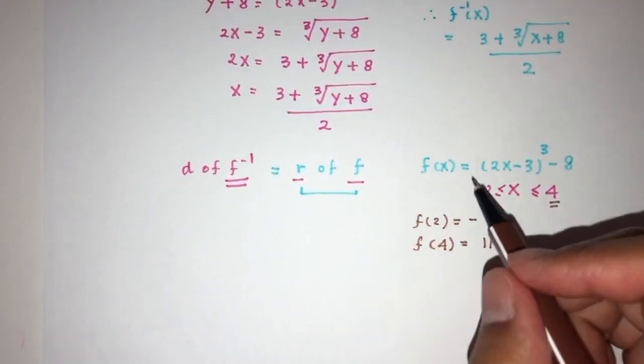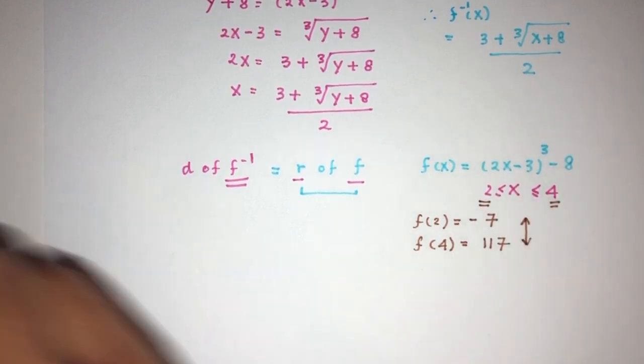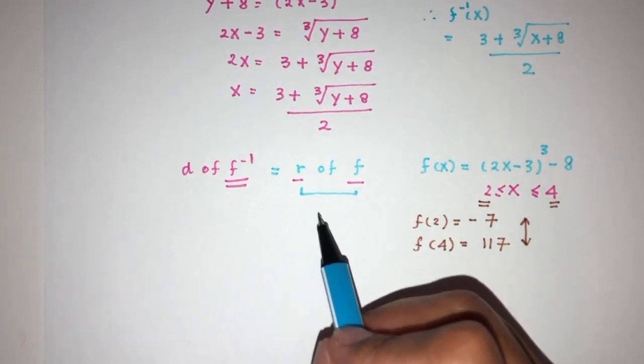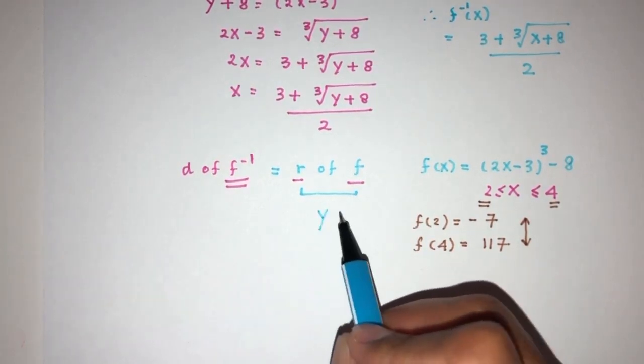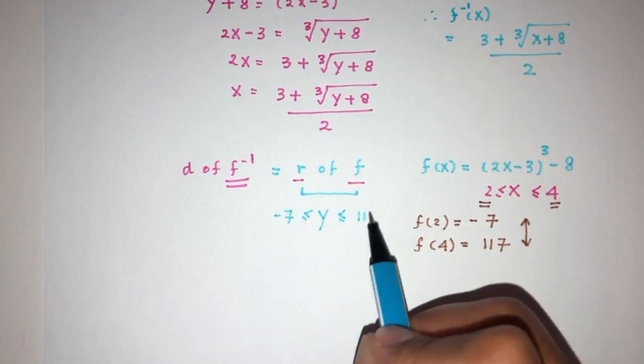As you can see, the function of f(x) is between those values. So, the y value is between those two. So, we conclude that the range will be y is between the value of minus 7 and 117.